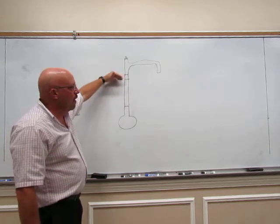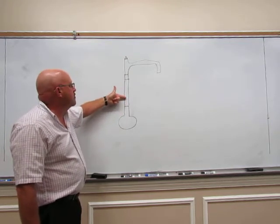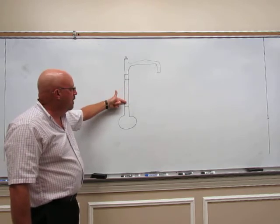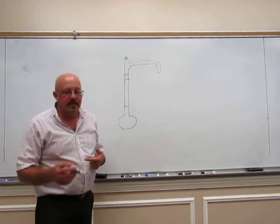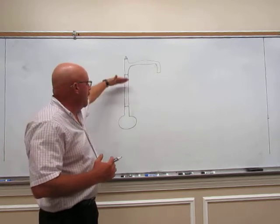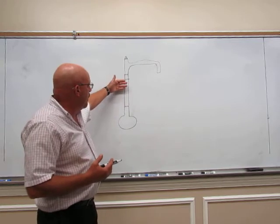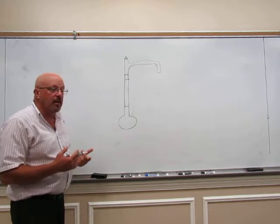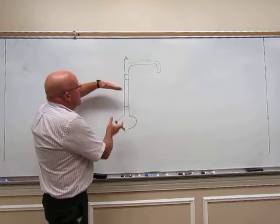Each time it does that is a theoretical plate. So by extending the column, putting a column in here gives us more length, then we would have more theoretical plates—that's more surface area for the vapors to condense on and then evaporate off of. And each time you go through one of those condensation evaporation cycles, you get the vapors that are coming up is more rich in the lower boiling point compound.